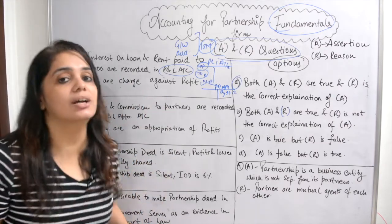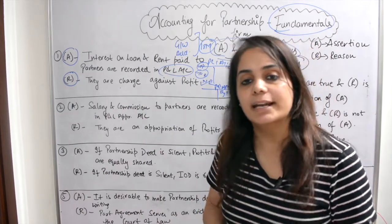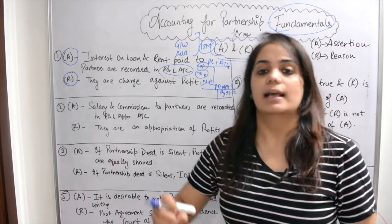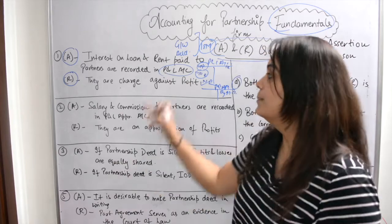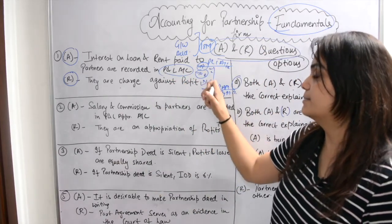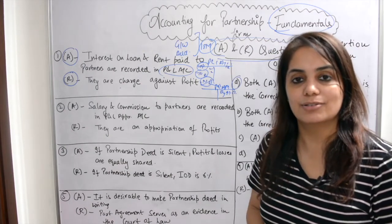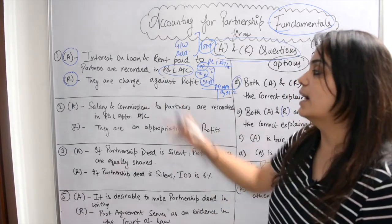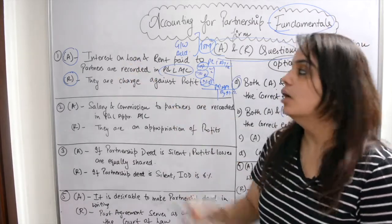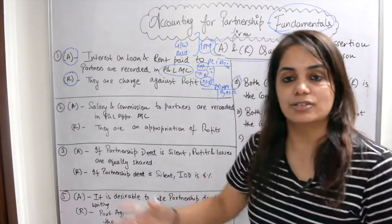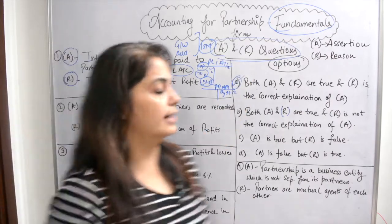The reason they are in P&L is because they are charged against profit. In simple terms: from whatever profit a company earns, we first pay interest on loan and rent, and the net profit comes out after that. All indirect expenses are deducted from gross profit to arrive at net profit — that is what 'charged against profit' means. So the answer is Option A: both A and R are true, and R is the correct explanation of A.